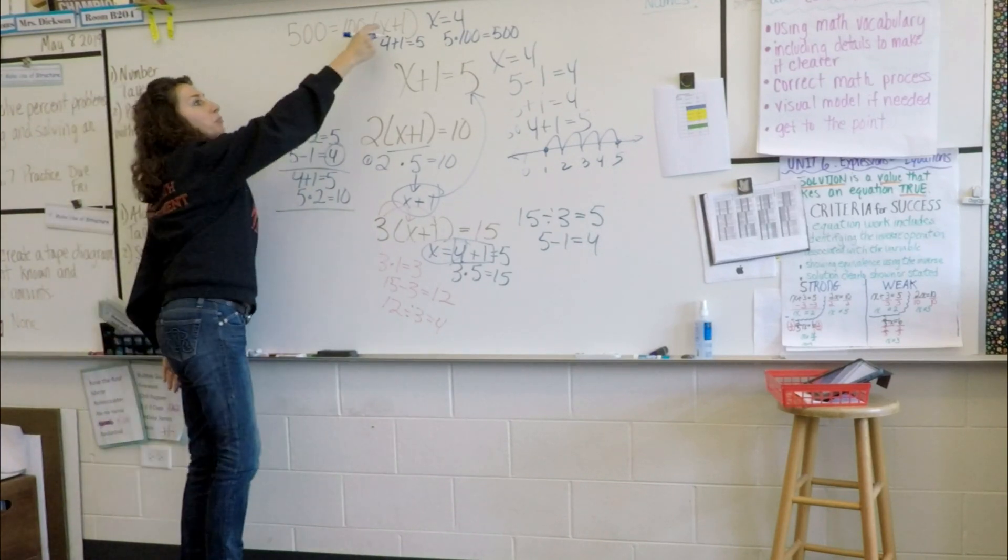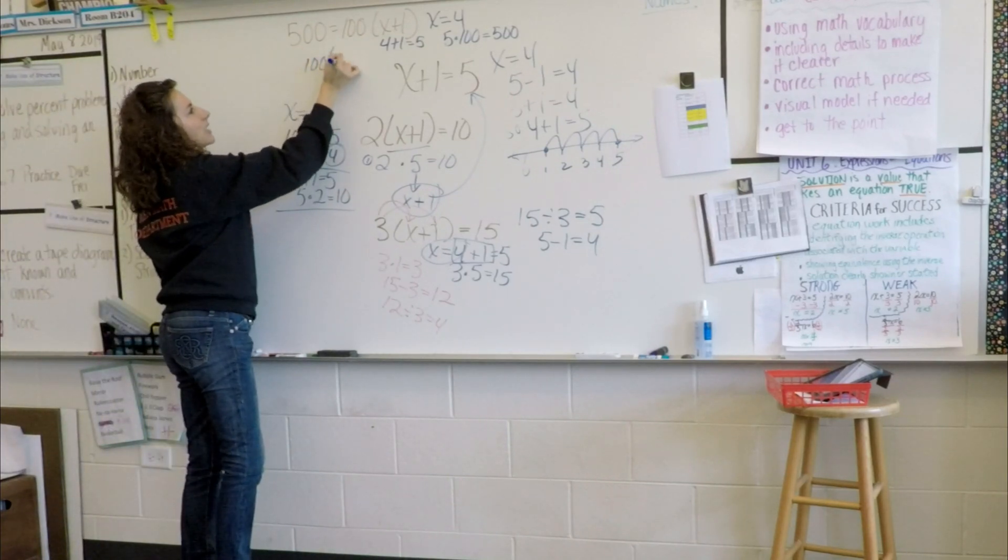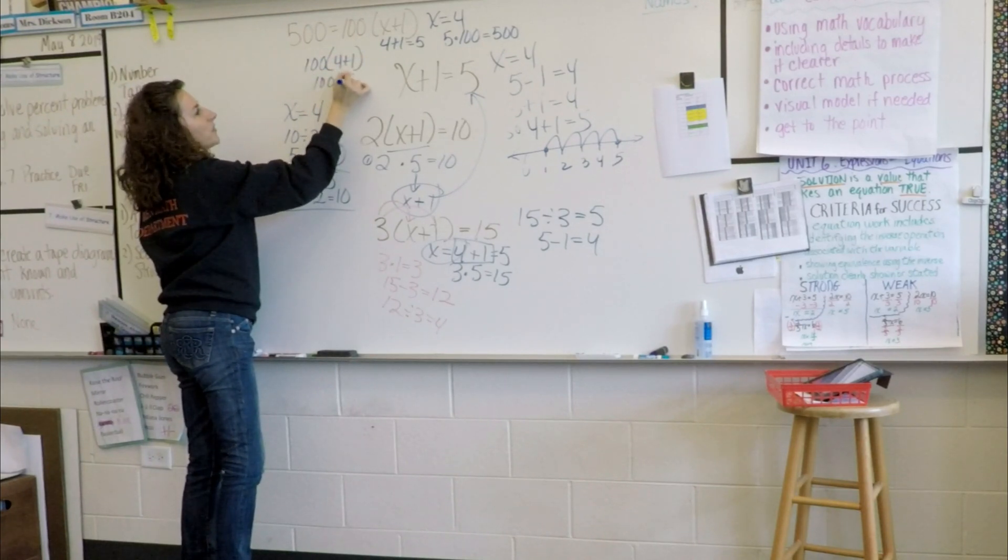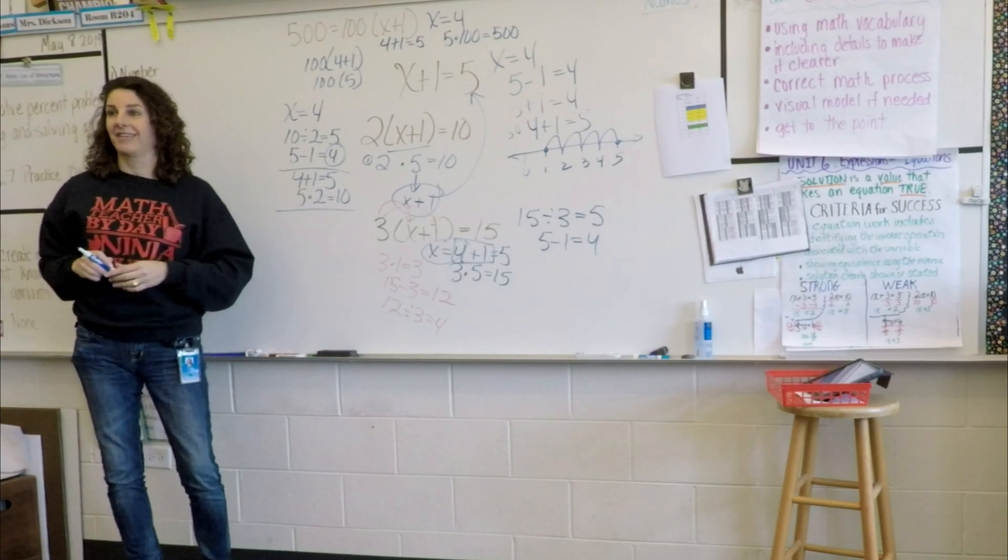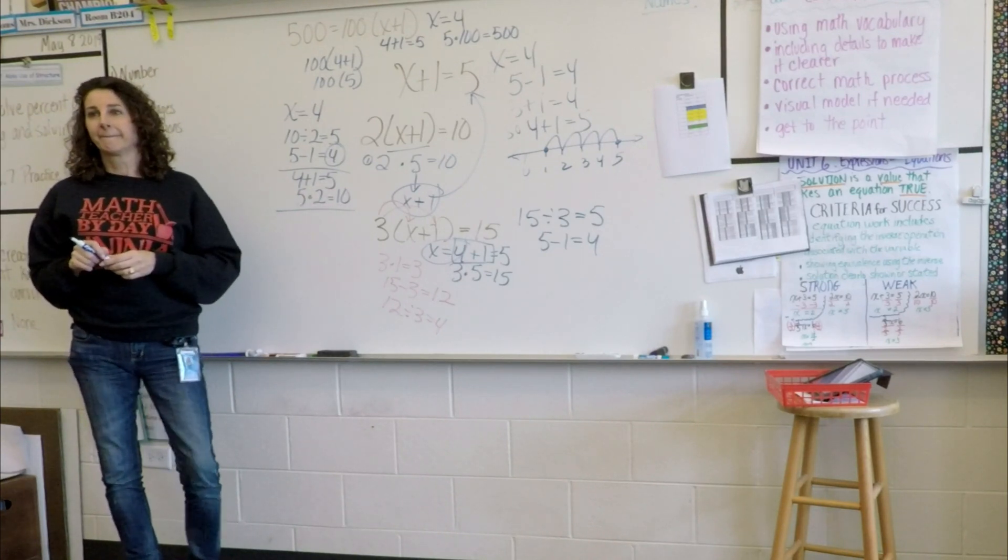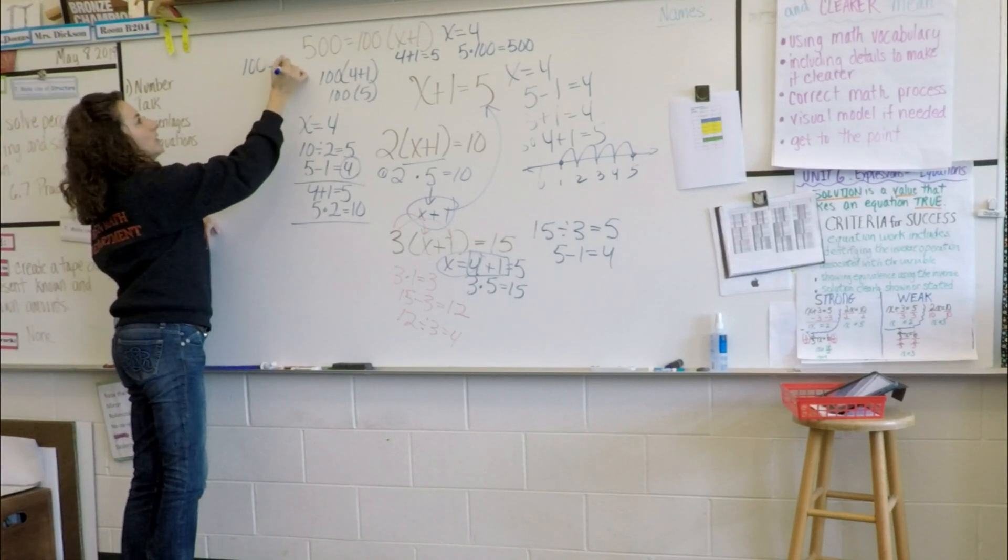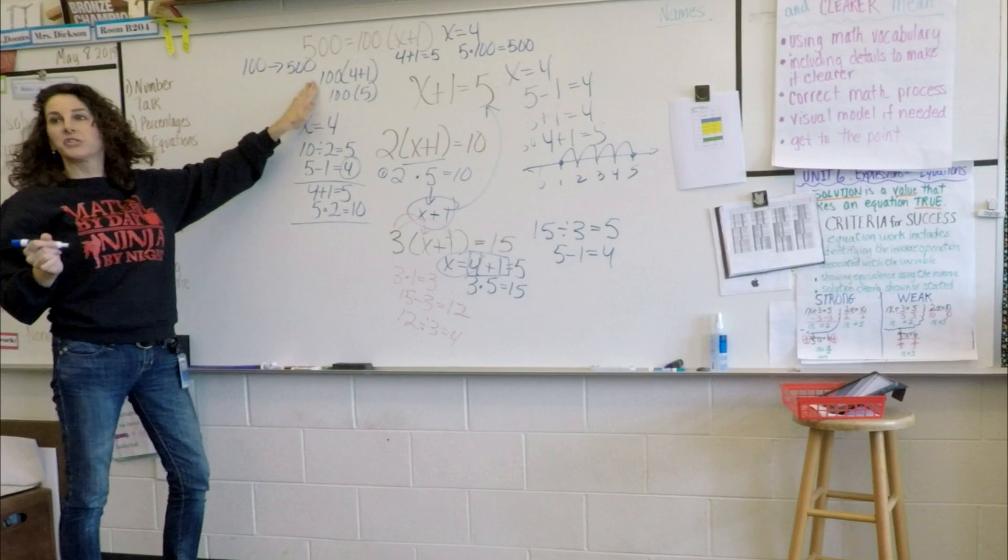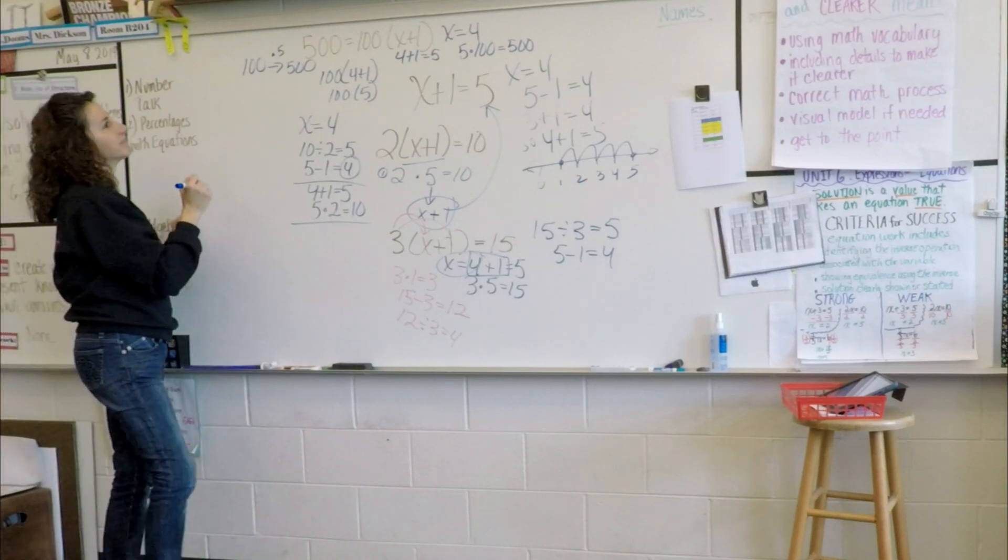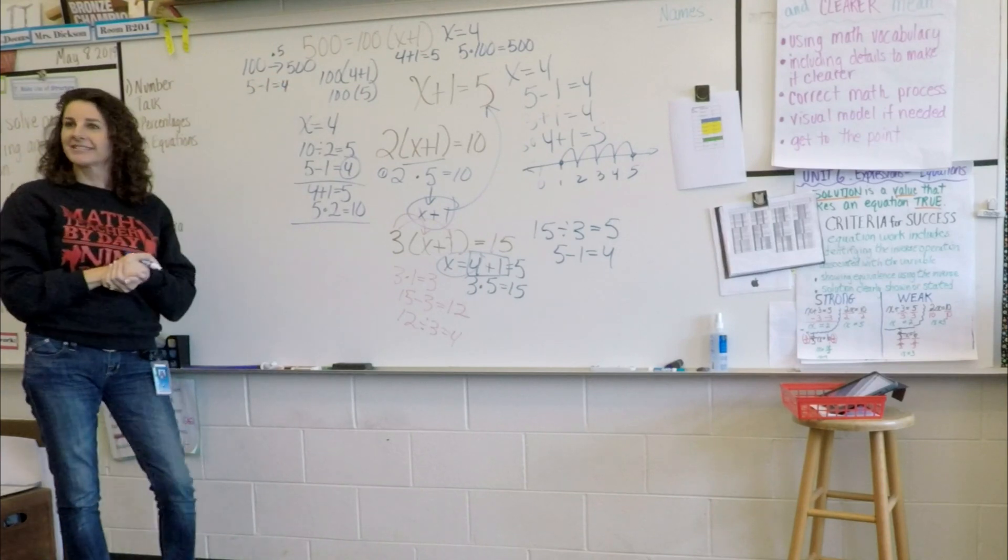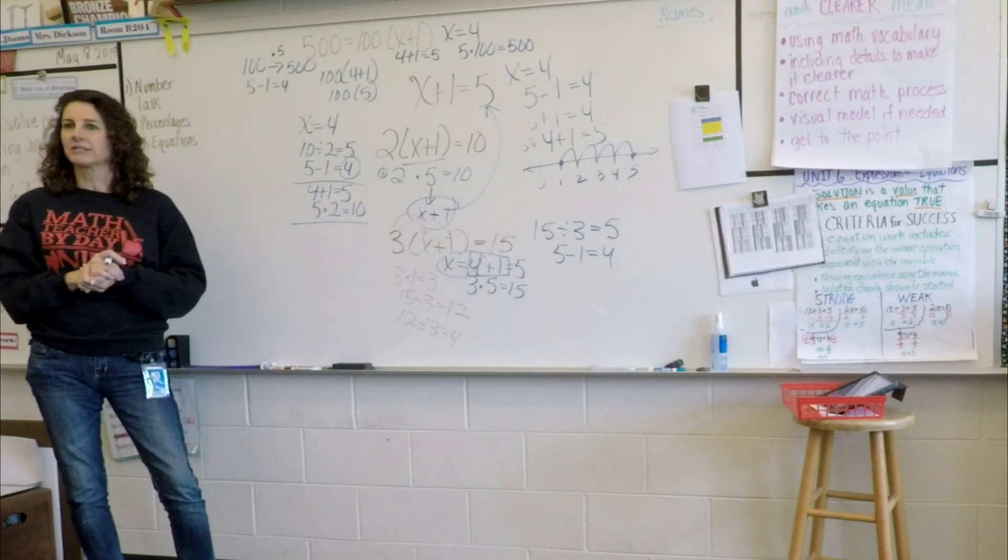So you assumed that x is going to be 4 again? Yeah. So you just replaced the x with the 4 and checked to see if it balanced? So you did 100 times 4 plus 1, which is 100 times 5? Yes. Excellent. Anybody have another way, a different way to explain the same thing? I kind of thought about it as I know that 100 times 500 is multiplied by 5. So does this capture your thinking? Going from 100 to 500, we multiply by 5. And I know 5 minus 1 is 4. Excellent. That's great. That's what I want to know. I want to know all the different pathways to get to these solutions.